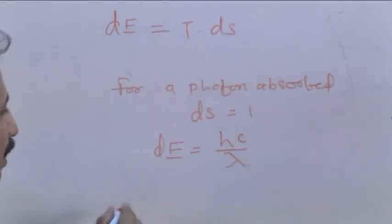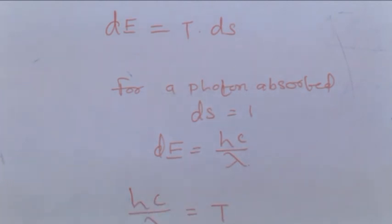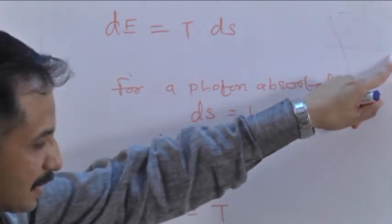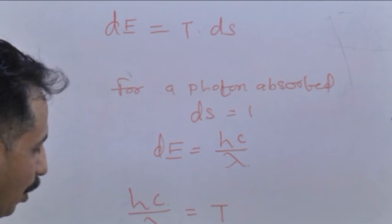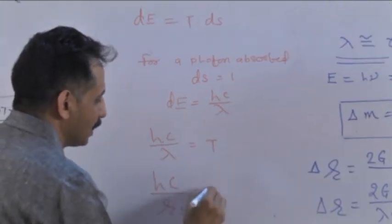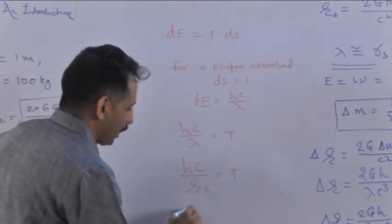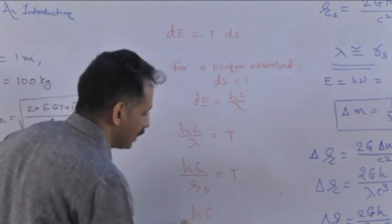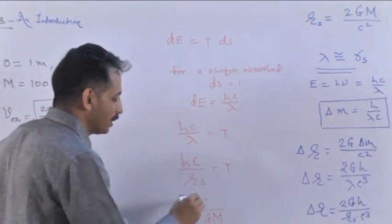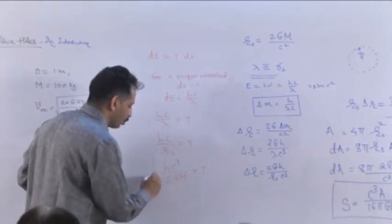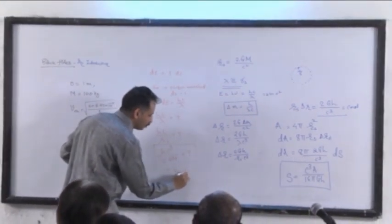So plugging in these two equations, hc upon lambda is equal to T. And lambda is of the order of Schwarzschild radius. And we know expression for Schwarzschild radius. So hc upon rs is the temperature of the black hole. And if we substitute rs, hc divided by 2GM, c going in the numerator, c cubed, this is equal to temperature. So we come at a point where temperature is inversely proportional to mass.